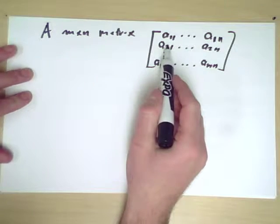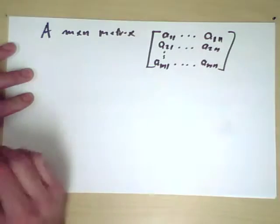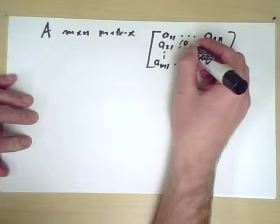So the first index tells you which row the element is in, and the second index tells you which column the element is in. So a generic element here is a_ij.